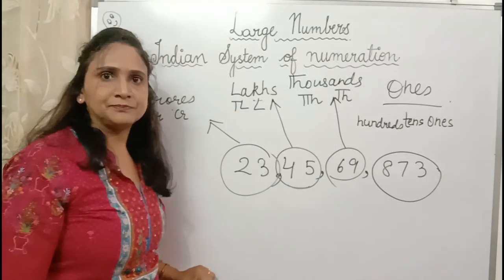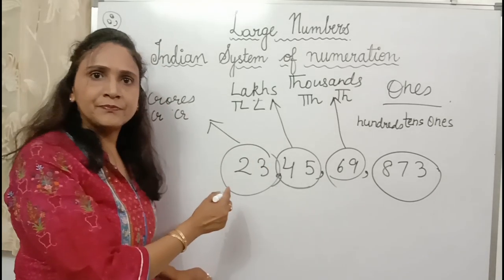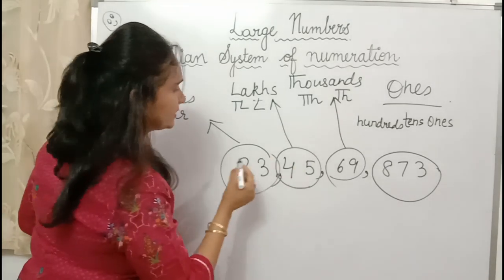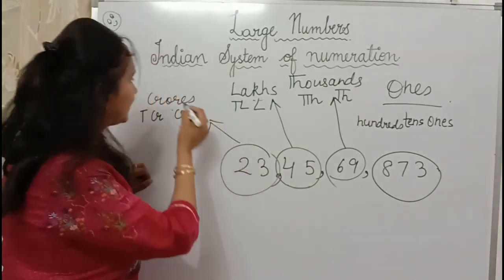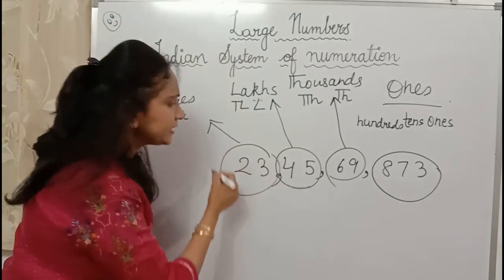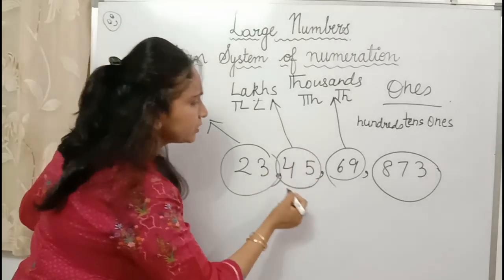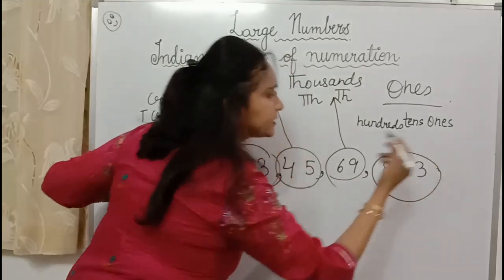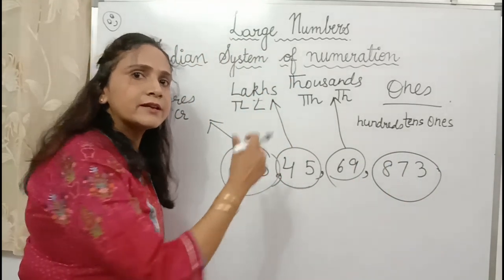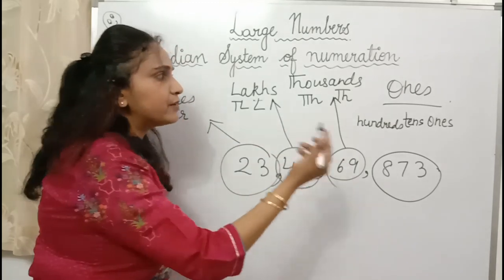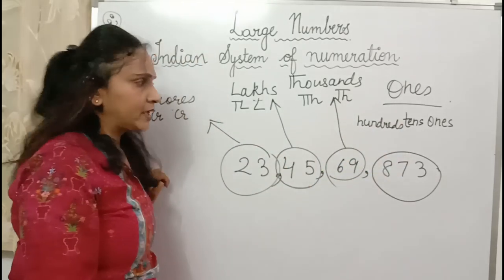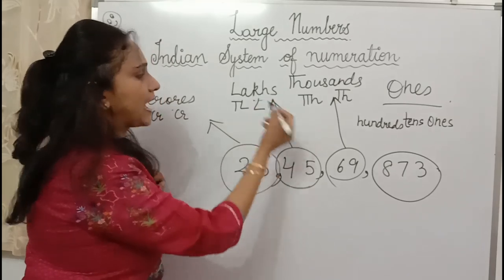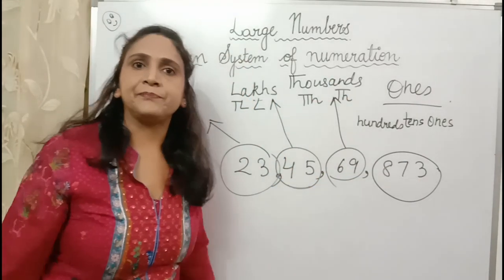Whenever we read a number, we read the number and the family's name also. For example, if I say 23 — so 23 and the family name is crore — 23 crore. So the number is 23 crore, 45, 06, 9, 8, 73. Only in one's family we don't write the family's name. In one's period, we don't write the period's name.